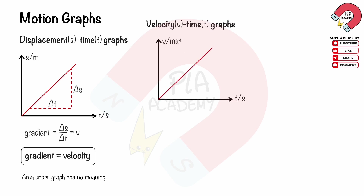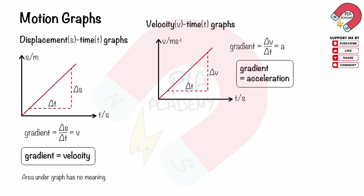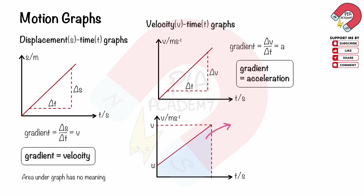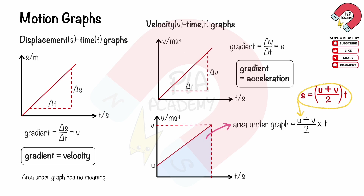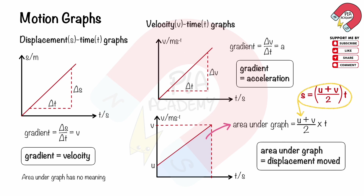Velocity-time graph: its gradient is change in velocity over change in time, which is equal to acceleration. So the gradient of a velocity-time graph is acceleration. The area under the graph is a trapezium shape equal to (u + v) / 2 × t, so the area under the velocity-time graph is displacement.